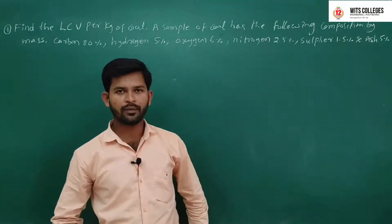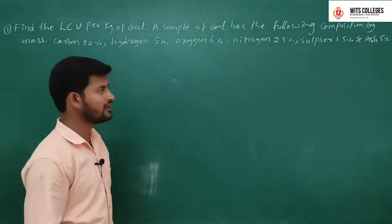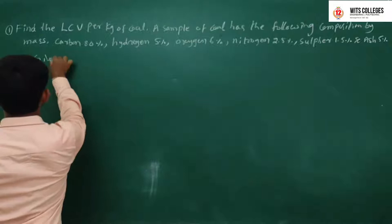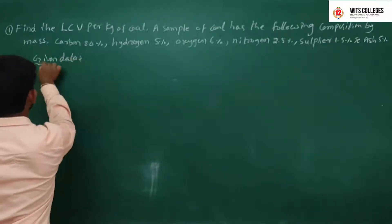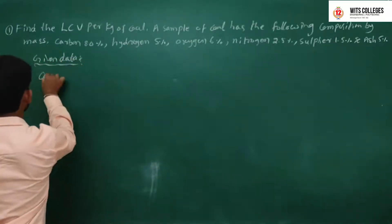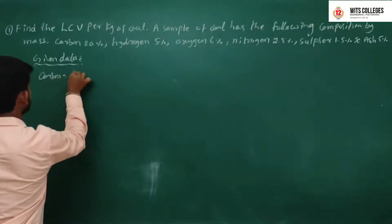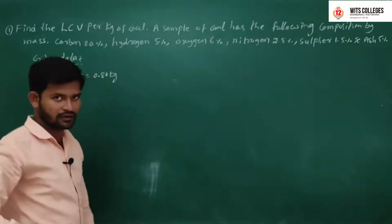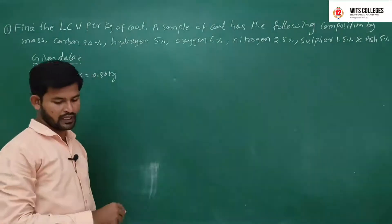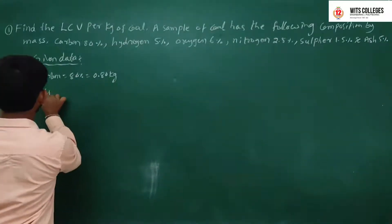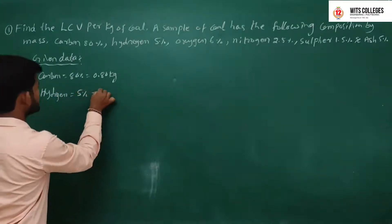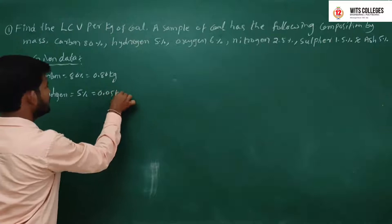Ash is 5%. First we write the given data. Composition of 1 kg of fuel: carbon = 80% = 0.80 kg, hydrogen = 5% = 0.05 kg.